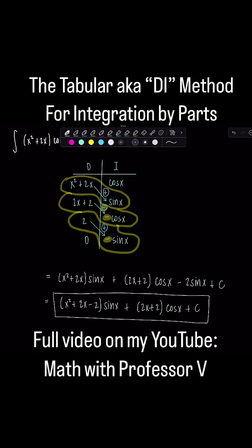2x plus 2 cosine x plus c. I think that looks so much better. What do you think? Let me know.